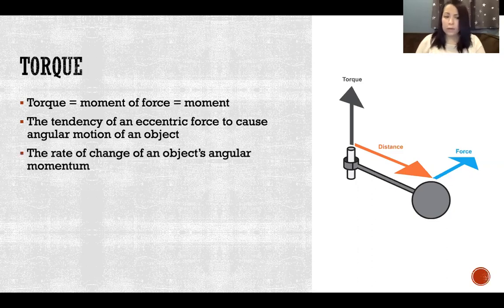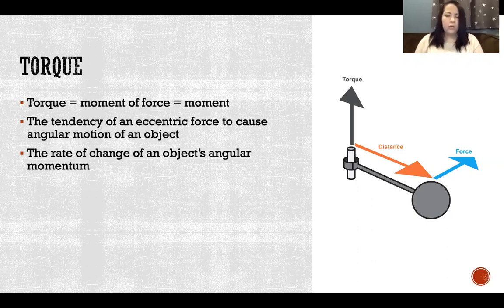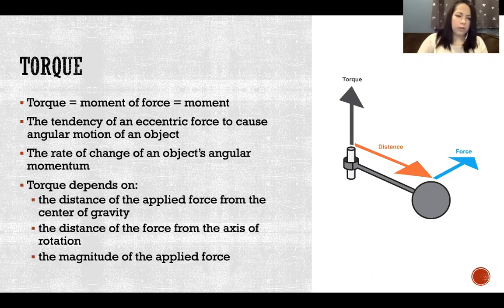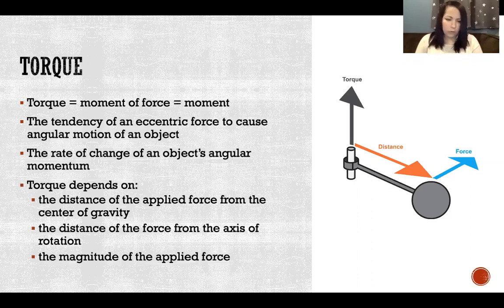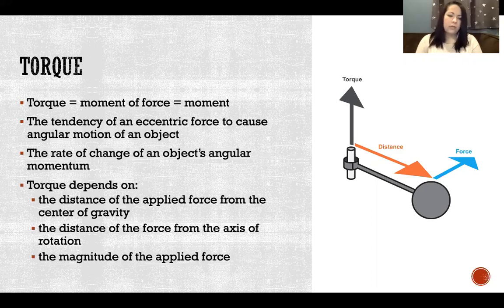We could also say that torque is the rate of change of an object's angular momentum, where angular momentum is the quantity of angular motion. So it's the rate of change of the amount of angular motion. Torque depends on a few different things: the distance of the applied force from the center of gravity, the distance of the force from the axis of rotation, and how much force is applied.